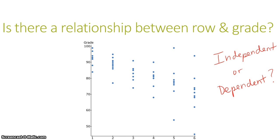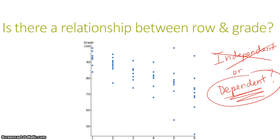Now if they were independent, what that would mean is that knowing which row somebody is sitting in doesn't change the distribution of the grades. But I can see that that's not true. So these two variables, row and grade, are not independent and in fact are dependent.